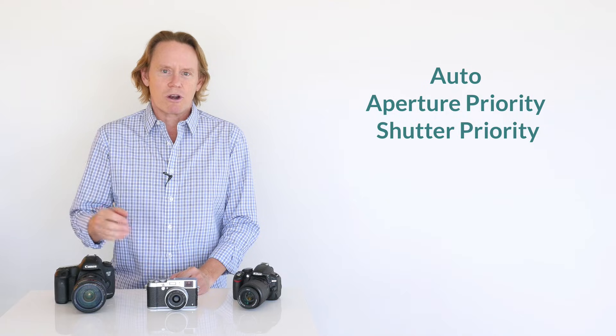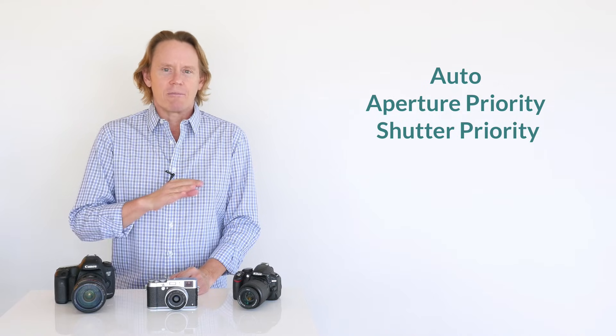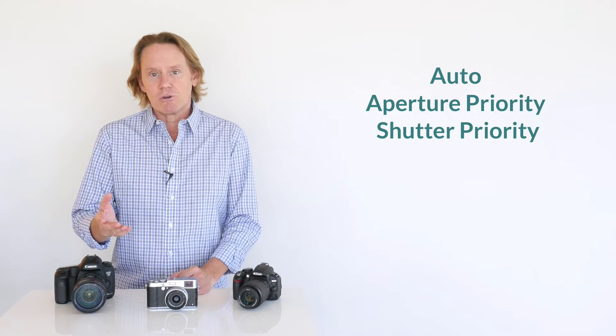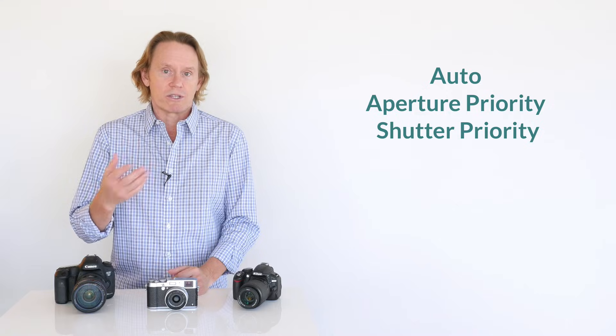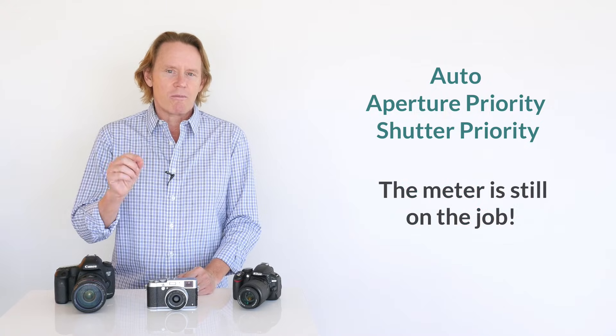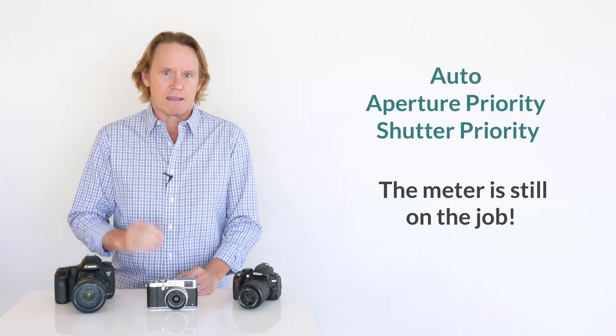If you shoot in full auto or one of the semi-automatic modes like aperture or shutter priority, you may be in the habit of ignoring the meter entirely, and you can usually get away with it. In fact, if you shoot with a fully automatic camera or a smartphone, you may never even see the meter at all, but it's still there behind the scenes doing its thing.